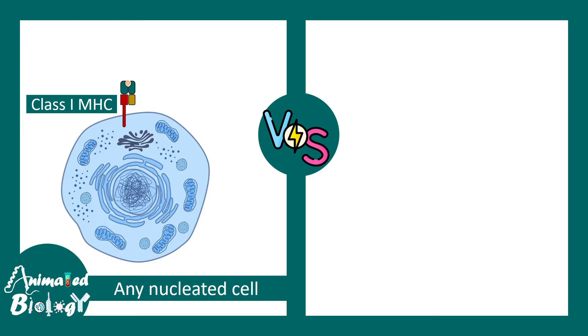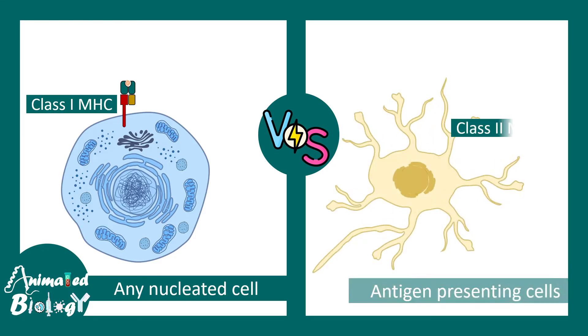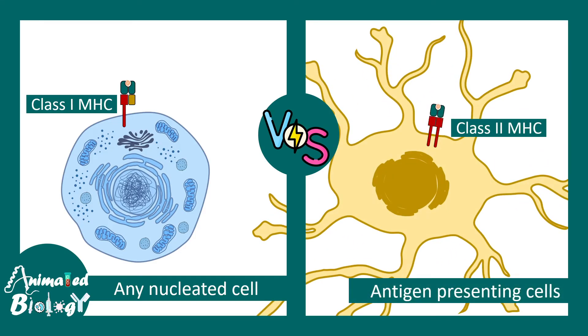Class 1 MHC is found in any nucleated cell, whereas class 2 MHC molecules are generally found on professional antigen-presenting cells such as dendritic cells, macrophages, or B cells.